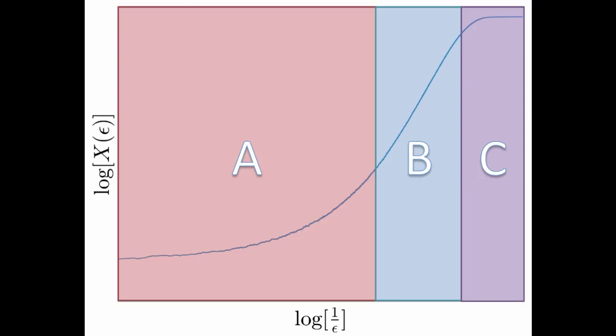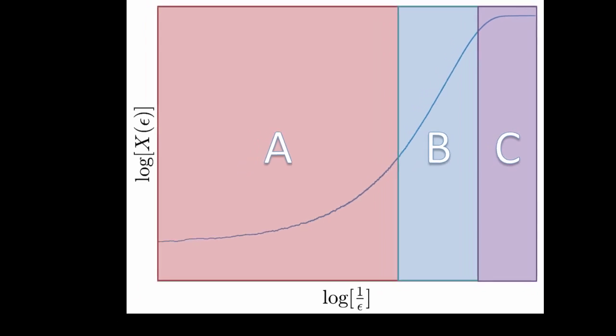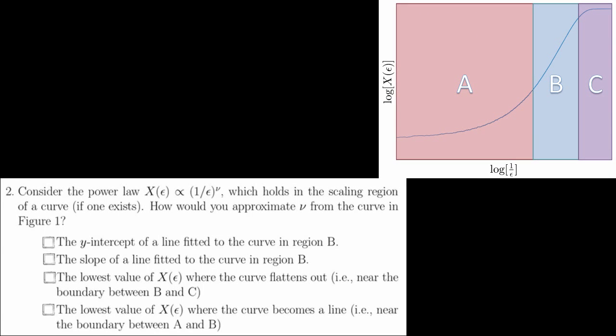For the remainder of the questions, we'll be considering this plot. This is a log-log plot of 1 over epsilon versus x of epsilon. For question two, we want to consider the power law x epsilon scales like 1 over epsilon to the nu. We know that this power law holds in the scaling region of this curve. Using this information, how would we then approximate nu given this curve? We could approximate nu given this power law in this plot using the slope of a line fitted to the curve in region B.